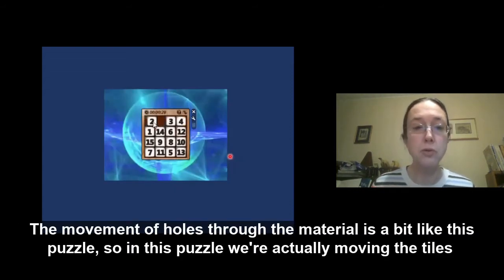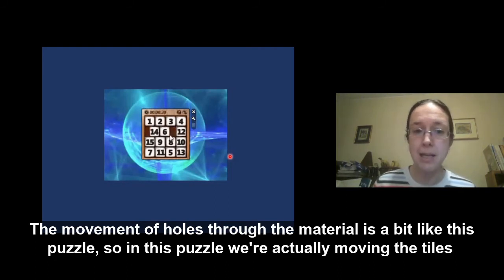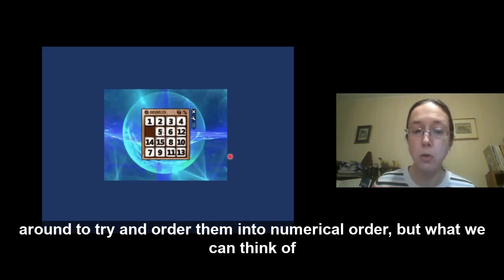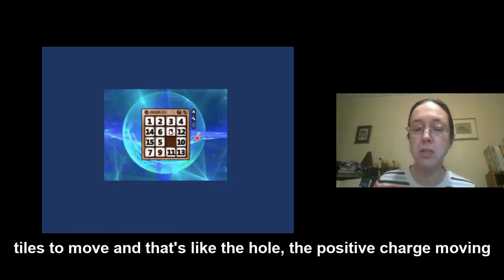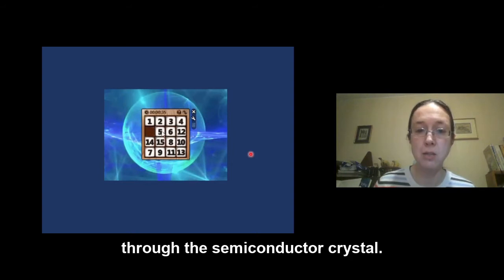The movement of holes through the material is a bit like this puzzle. So in this puzzle, we're actually moving the tiles around to try and order them into numerical order. But what we can think of moving around is this one brown gap in the puzzle, which allows the other tiles to move. And that's like the hole, the positive charge moving through the semiconductor crystal.